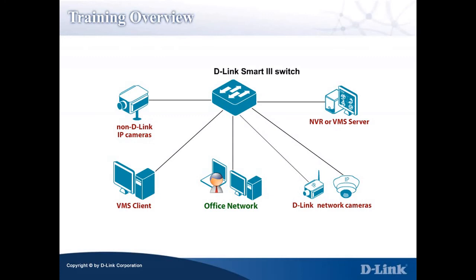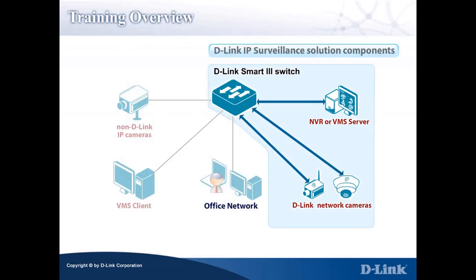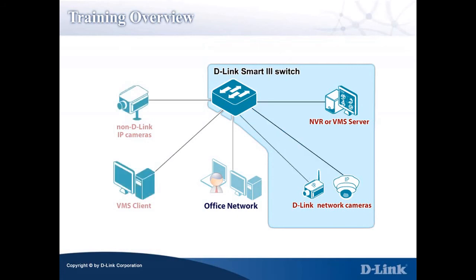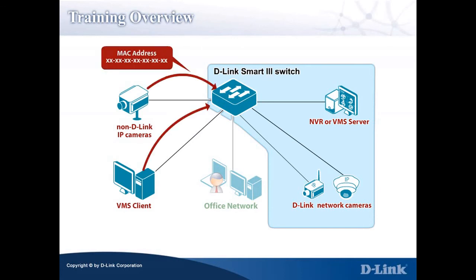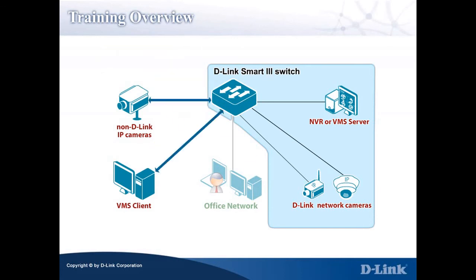D-Link Smart 3 switches have been designed to detect D-Link IP surveillance solution components, including cameras and the D-Link NVR, using the D-Link Organizational Unique Identifier. As for non-D-Link IP cameras and the VMS client, by having their MAC addresses added to the switch, they can then be automatically detected.